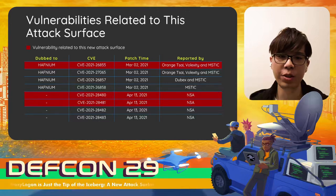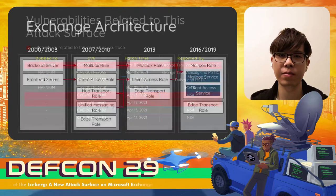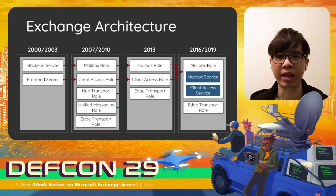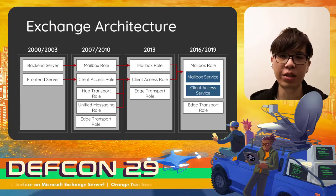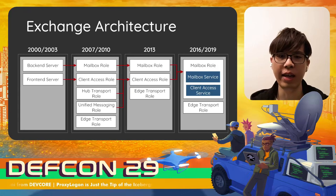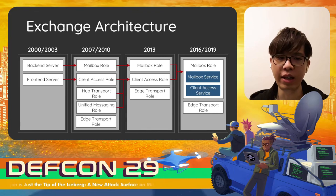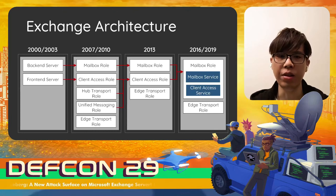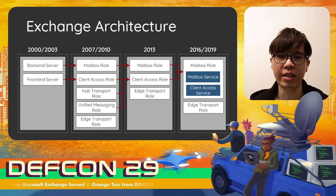Exchange is a very sophisticated application. Before we cut to the checks, let me introduce the architecture first. Since 2000, Exchange has released a new version every three years. Whenever Exchange released a new version, the architecture changed a lot and became different. These changes and iterations make it difficult to upgrade an Exchange server. In order to ensure compatibility between the new architecture and old ones, several design shortcuts and debts were incurred, leading to the new attack surface we found.